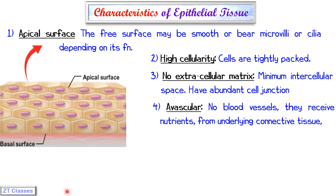The fourth characteristic is that epithelial tissues are avascular — they don't have any blood vessels passing through them. Since there are no blood vessels, the living cells in epithelial tissue receive oxygen and nutrients from the connective tissue beneath them, which is vascular. These nutrients and oxygen are transported via diffusion into the epithelial tissue cells.